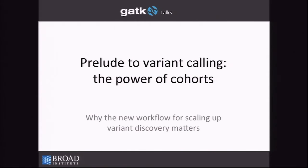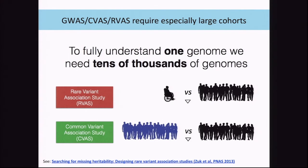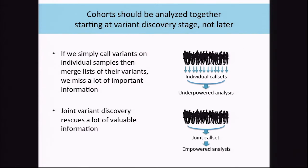We're going to talk about why we should call variants at the cohort level and how we do that. It's almost never useful to just take a single genome and look at it because we need context. There are a few cases like rare variant association studies where one genome is meaningful, but usually you're looking at large cohorts, and we can get a lot of information out of a large cohort which can help us actually call variants better.